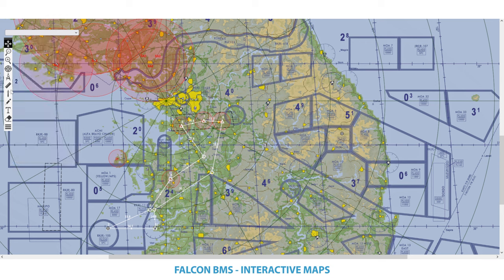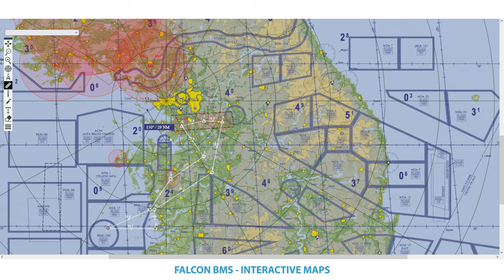Then there's the measurement tool, which is also one of the basic features. When you make it active, you can click anywhere on the map, drag the measurement tool around, and it shows you the heading and distance from the point of origin. This is useful for measuring from your takeoff point how far away you're flying, or for planning an emergency that doesn't follow the flight path.